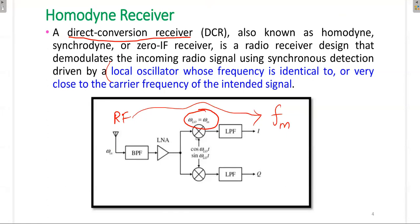For down conversion, we use synchronous detection, meaning the received signal is multiplied with the local oscillator frequency to down-convert the original message signal from the carrier frequency. Then it is passed through a low pass filter. We use two channels: an in-phase channel and a quadrature channel separately. The in-phase component is multiplied with cos(ω_LO·t) and the quadrature component is multiplied with sin(ω_LO·t).